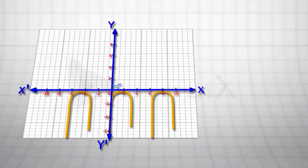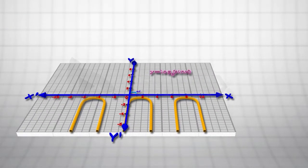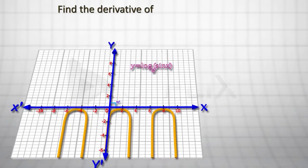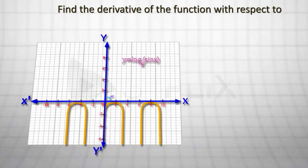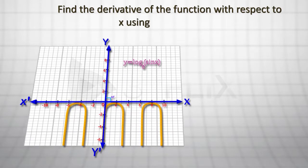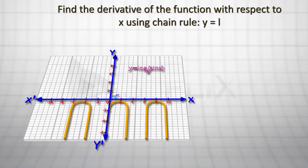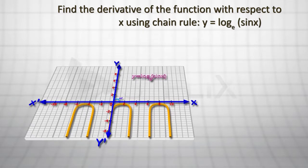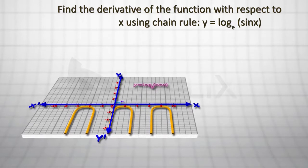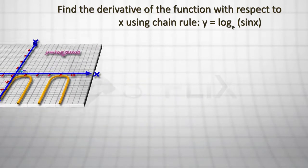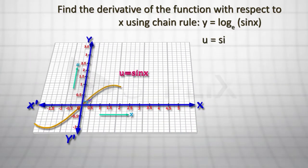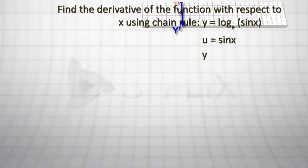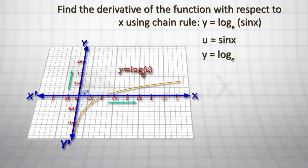Let us take function y to be equal to log of sine x to the base e and find the derivative of the function with respect to x using the chain rule. To find the derivative of the given function y is equal to log of sine x to the base e, let us take u to be equal to sine x. Then, y is equal to log of u to the base e.